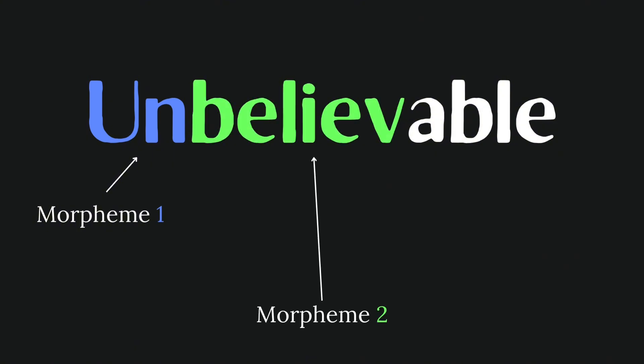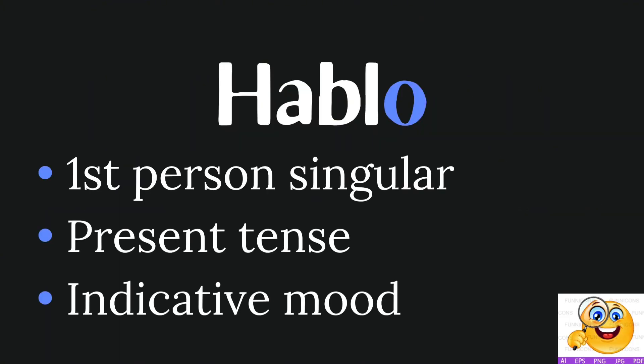In the word 'unbelievable,' you have three morphemes: 'un,' which means not; 'believe,' which is just the verb; and the suffix 'able' — which altogether means 'not able to be believed.' The morphemes we just looked at all contain just one piece of information, but it's possible for morphemes to convey more. The final 'o' in Spanish hablo, or 'I speak,' conveys that the verb is in the first person singular, present tense, and indicative mood — all in one morpheme.